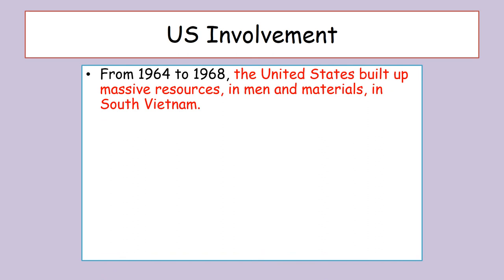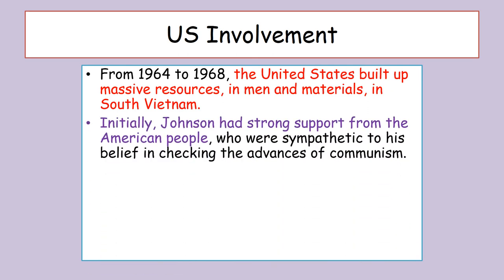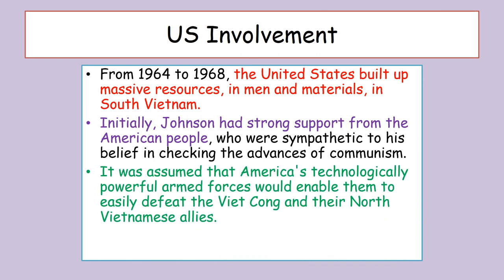From 1964 to 1968 the United States built up massive resources, men, and materials in South Vietnam. Initially Johnson had strong support from the American people, who were sympathetic to his belief in checking the advance of communism. It was assumed that America's technologically powerful armed forces would easily defeat the Viet Cong and their North Vietnamese allies. However, this was not to be the case - it was a very long, very difficult war, and in the end America was not victorious.